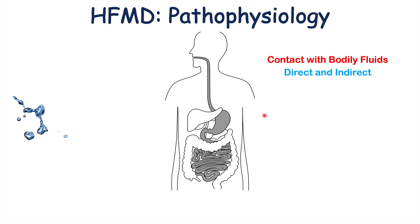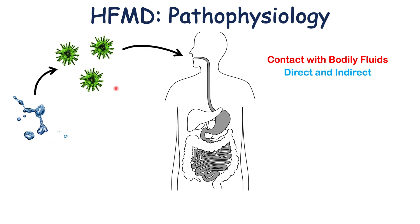When an individual comes into contact with secretions containing the virus, the virus either contacts their respiratory or oral mucosa, or they accidentally ingest it and it enters the gastrointestinal system. Once inside, it starts to multiply and replicate and enter surrounding lymphatic tissue — in the throat, respiratory system, or gastrointestinal system. This typically takes around 24 hours.